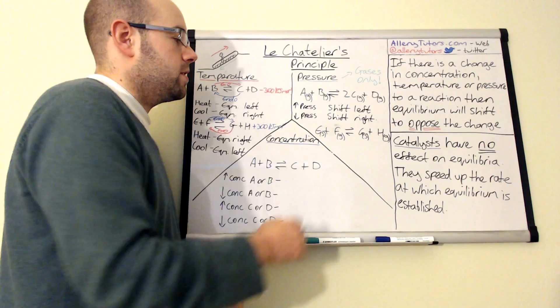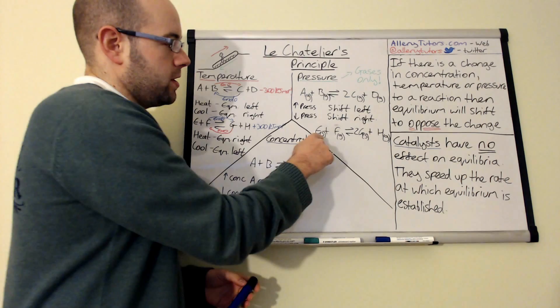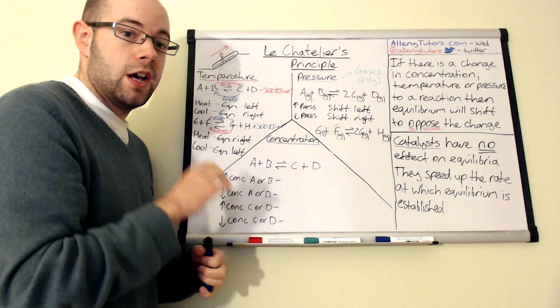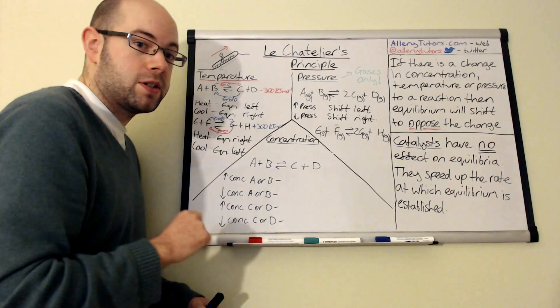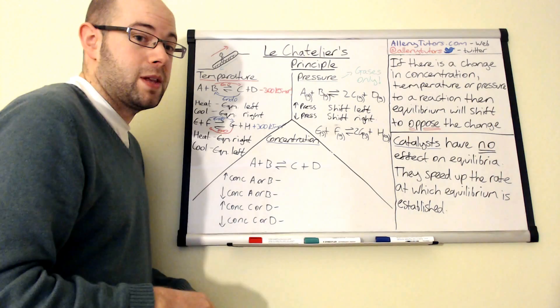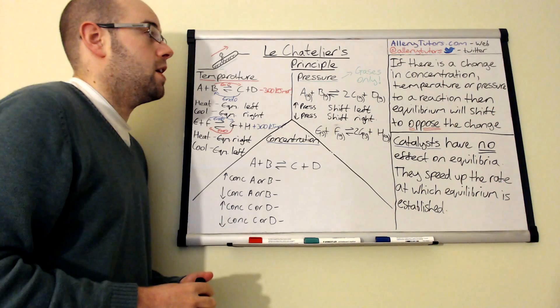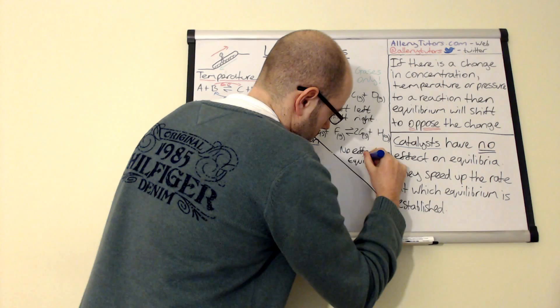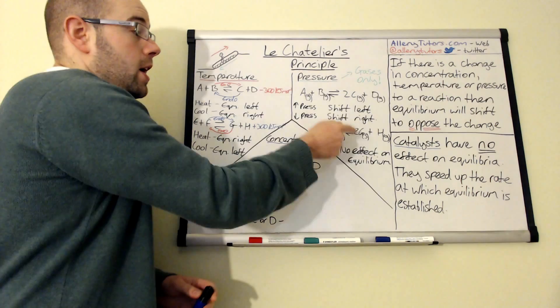Watch out for this trap: if some species are solids, solids don't play a part in pressure calculations. You must only count gaseous molecules. For example, if a reaction appears to have three moles on one side and two on the other, but some are solids, you may actually have only one mole of gas on each side — meaning pressure has no effect on the equilibrium position. Only count gaseous molecules.